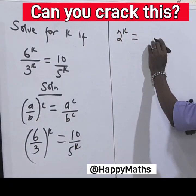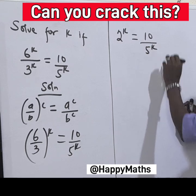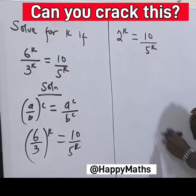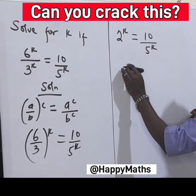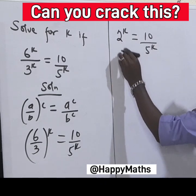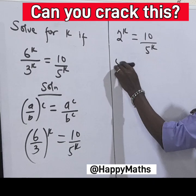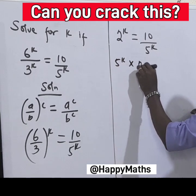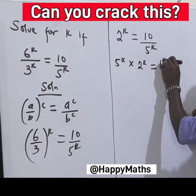So we have 2 raised by k equal to 10 over 5 raised by k. Now what do we do from here? We cross multiply, or we can multiply both sides by 5 raised by k. So 5 raised by k times 2 raised by k equals 10.